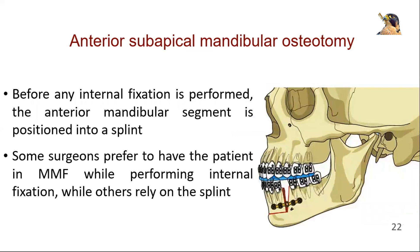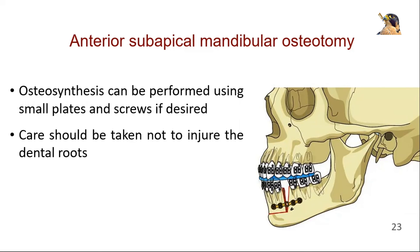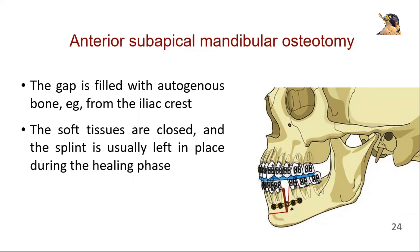Before any internal fixation is performed, the anterior mandibular segment is positioned into a splint. Some surgeons prefer to have the patient in MMF while performing internal fixation, while others rely on the splint. Osteosynthesis can be performed using small plates and screws if desired. Care should be taken not to injure the dental roots. The gap is filled with autogenous bone, for example from the iliac crest. The soft tissues are closed and the splint is usually left in place during the healing phase.